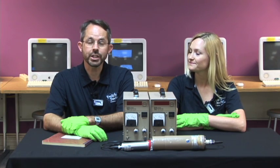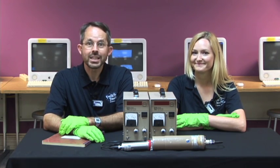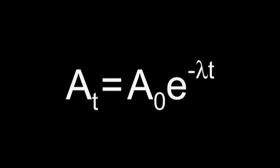We're going to start with an equation. Don't panic — as far as equations go in physics, this one isn't too bad. This equation tells us that the activity of a radioactive substance at any time t is equal to some initial activity multiplied by e raised to the power of negative lambda t, where lambda is the decay constant of the particular radioactive isotope, and t is the time. Our first goal is to find lambda, the decay constant.